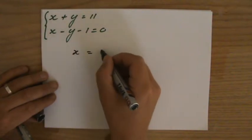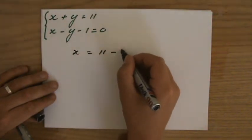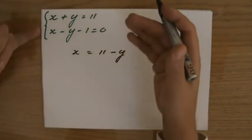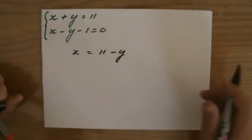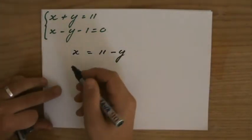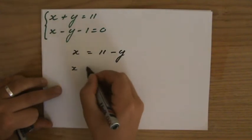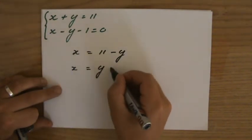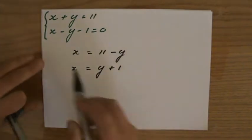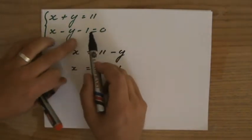x = 11 - y. And I'm going to make x the subject in the second equation as well, because that is also relatively easy. x = y + 1. Yeah, plus y plus 1.